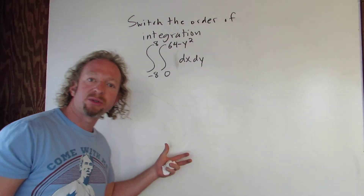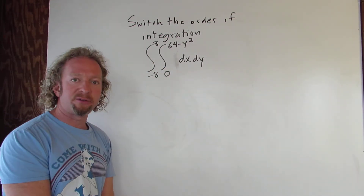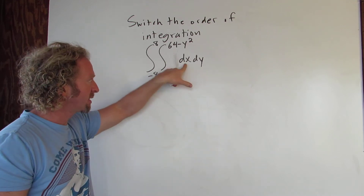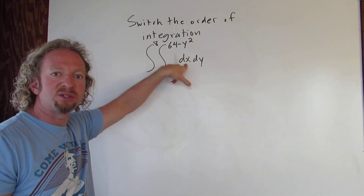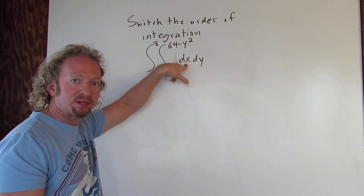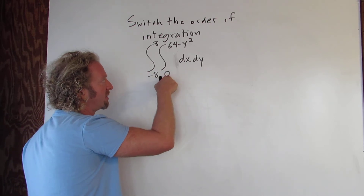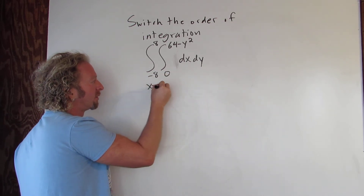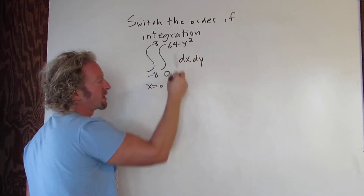In this video we're going to switch the order of integration for this definite integral. The dx tells us that we're integrating with respect to x first, so x is going from 0 to 64 minus y squared.